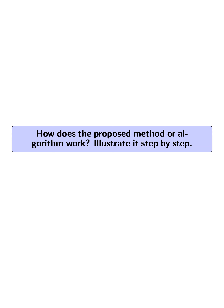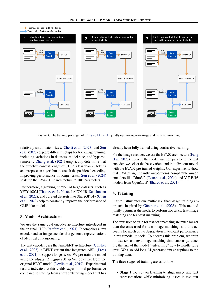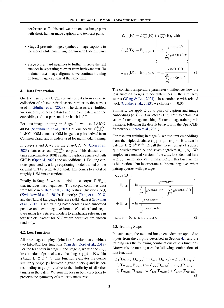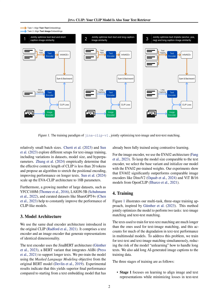How does the proposed method work? The method uses a multi-task, three-stage training approach. In stage one, the model learns to align image and text representations by training on text-image pairs with short captions and text-text pairs. Stage two introduces longer synthetic image captions while continuing training with text-text pairs. In stage three, hard negatives are used to further improve the text encoder's ability to distinguish relevant from irrelevant text.